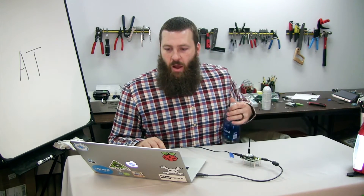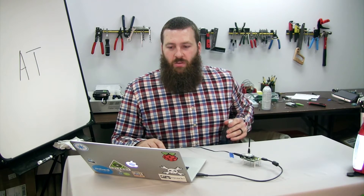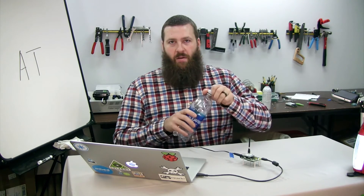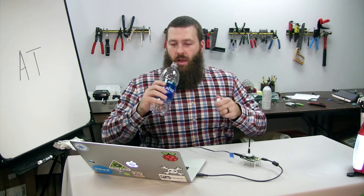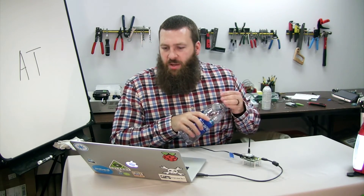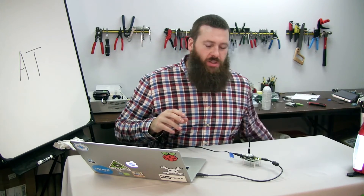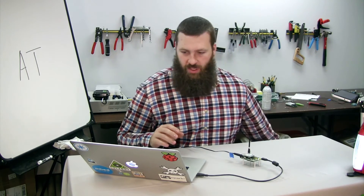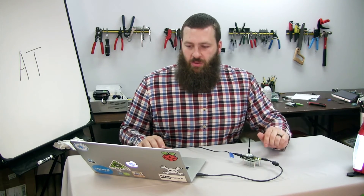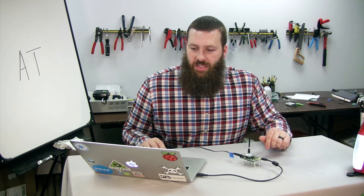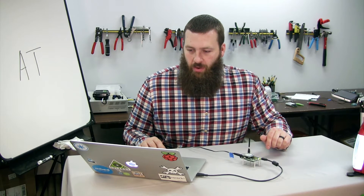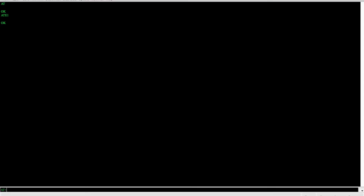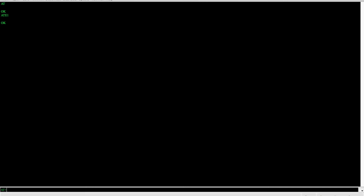Now, going back to the terminal program, we can do some things that are a bit more useful than simply having it respond 'OK.' The first thing we're going to do is check the signal strength, just to make sure you're in a good signal area for the modem you're using. This is one of the Hayes AT commands and is general for all Skywire modems.